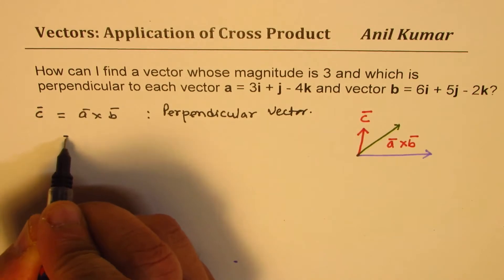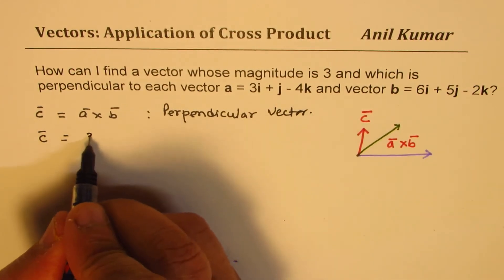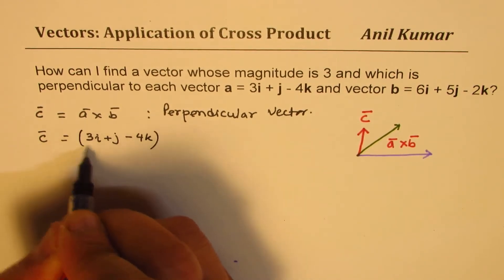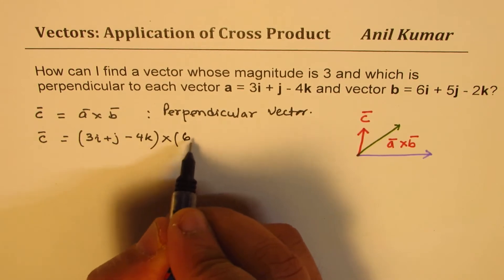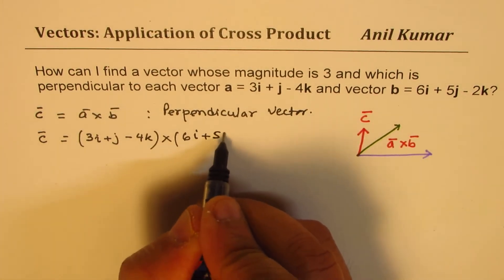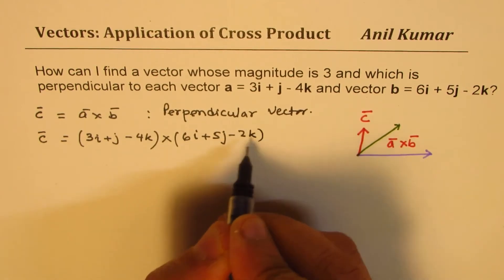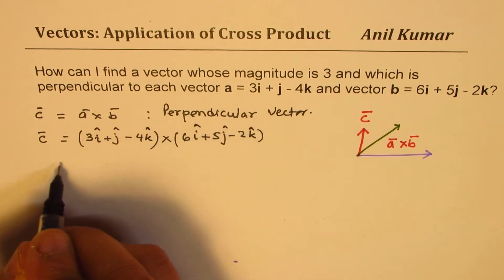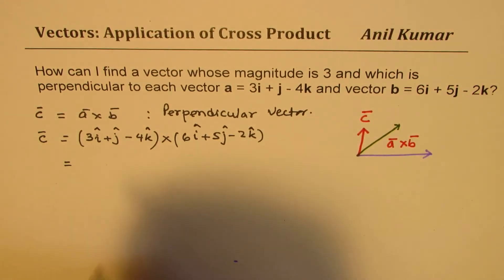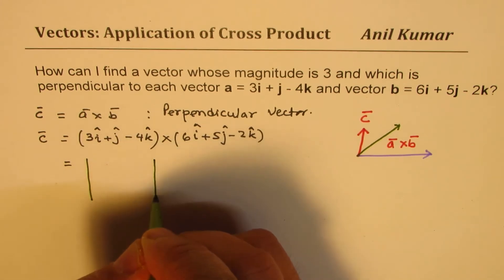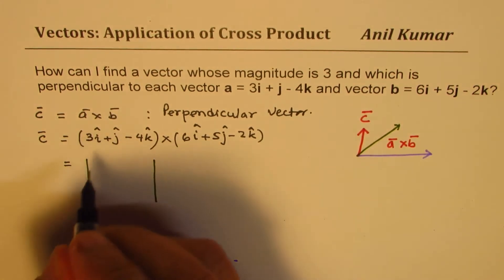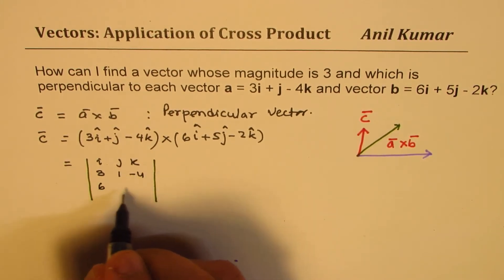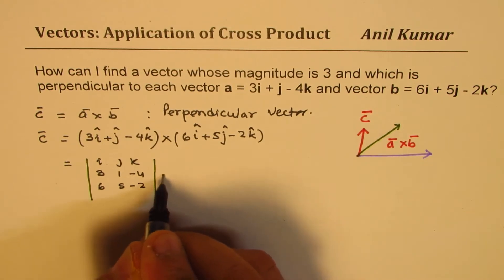So when you cross multiply you get (3i + j − 4k) cross (6i + 5j − 2k). Now i, j, k are the unit vectors. I prefer to write them in the form of a matrix — it becomes easier. So we can write: i j k / 3 1 −4 / 6 5 −2.